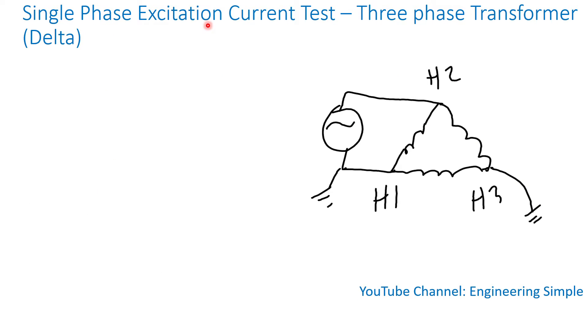For single phase excitation current tests on three phase transformers connected as a delta, what you do is you apply voltage to one winding, so it's phase to phase.